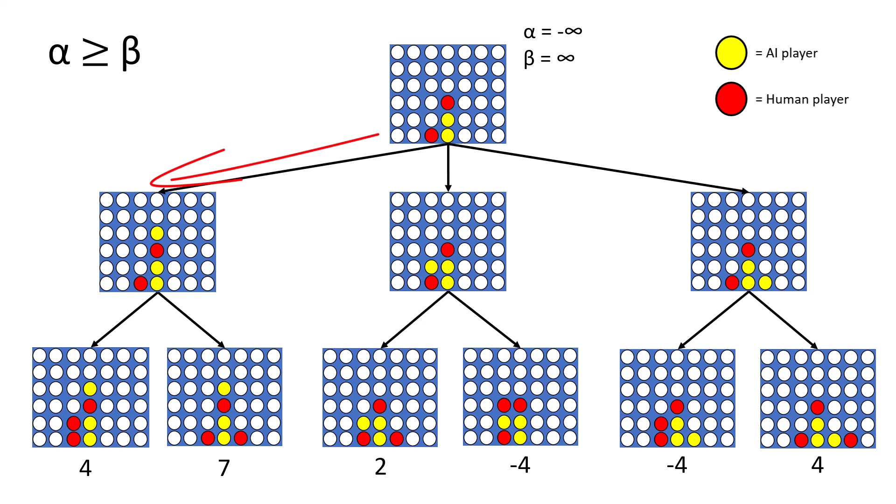It pushes these values down to the left side of the tree until it reaches the bottom. It looks at both of the bottom nodes, and since at this point it is the human player or minimizing player's turn, it would choose the smaller of the numbers, meaning that the beta value would change. Between 4 and 7, 4 is a smaller number, so the beta value changes to 4.